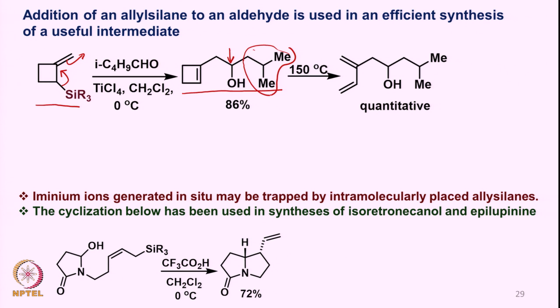Now if we heat this particular substrate, the 4-membered ring opens up to form a diene, which is a useful diene for various kinds of Diels-Alder reactions. Another possibility is that iminium ions which can be generated intramolecularly can trap allylsilanes. For example, if you have a substrate of this kind and treat with trifluoroacetic acid — this is another example of a Brønsted acid —